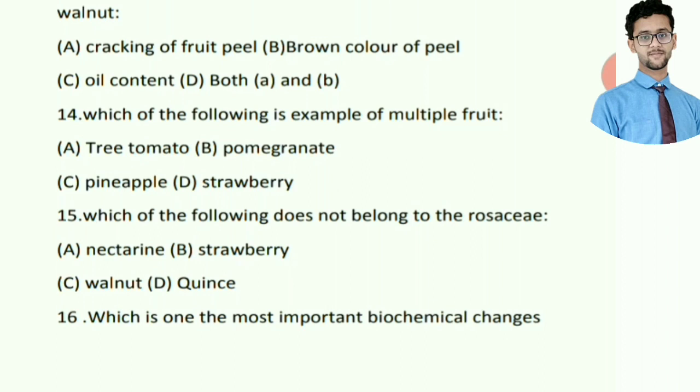The ideal harvest index options are: cracking of fruit peel, brown color of peel, oil content, and option D — both A and B. The right answer is both A and B: cracking of fruit peel and brown color of peel.